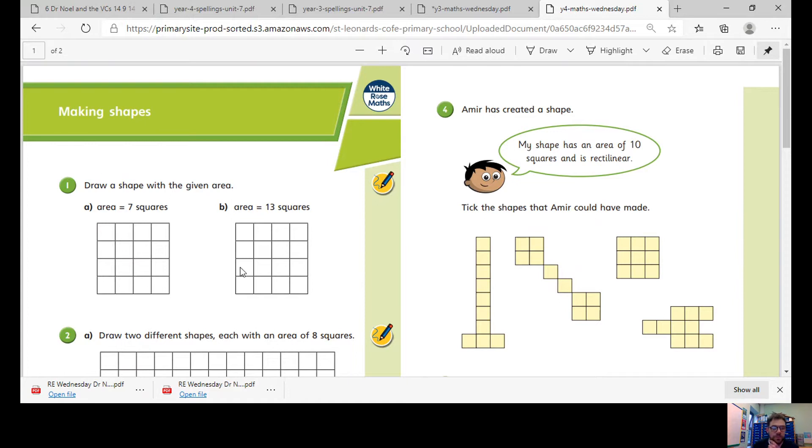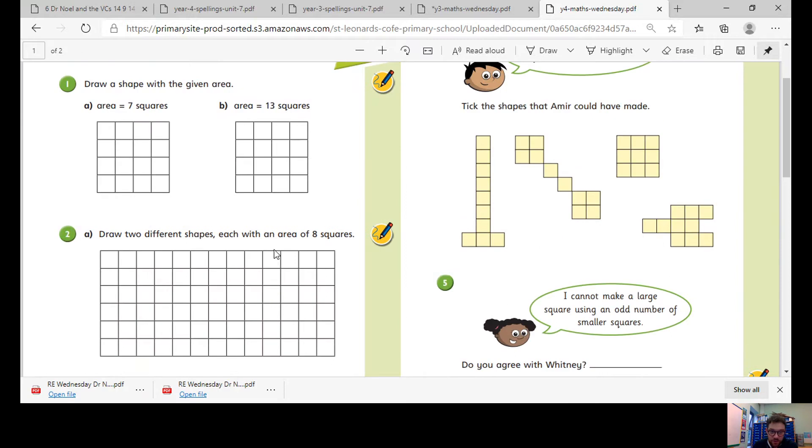On the first one here, draw a shape with the given area. So seven squares, find a shape seven squares, any shape. Thirteen squares. It says here draw two different shapes each with an area of eight, so each has got to be eight, it's got to look different.